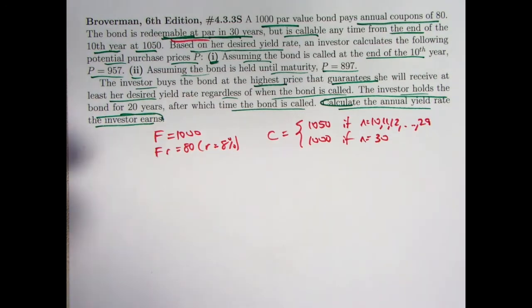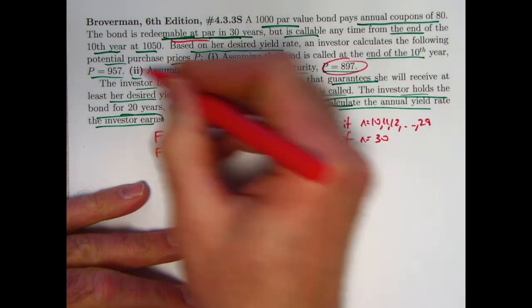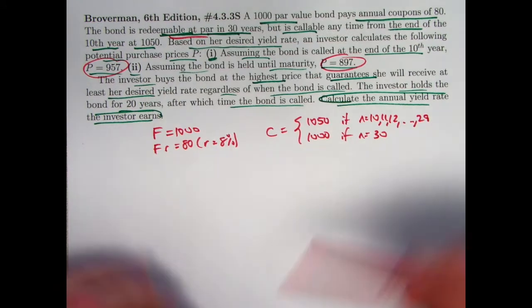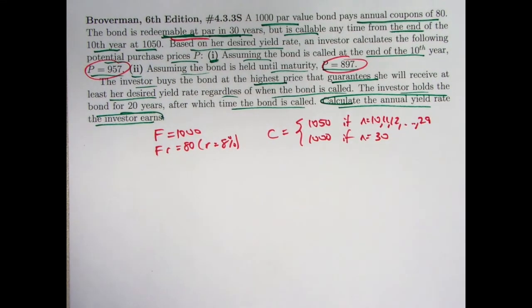We are buying at a discount. Both of these P's are less than the redemption amount in either situation. So, the worst case scenario for the investor is the bond is called as late as possible.